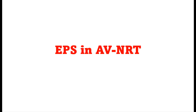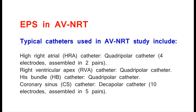EPS in AVNRT. Typical catheters used in AVNRT study include the High Right Atrial (HRA) catheter, a quadripolar catheter with four electrodes assembled in two pairs.